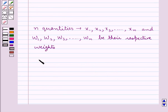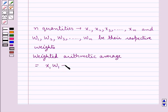We have the weighted arithmetic average is equal to x₁w₁ plus x₂w₂ plus x₃w₃ plus and so on up to xₙwₙ and this whole upon